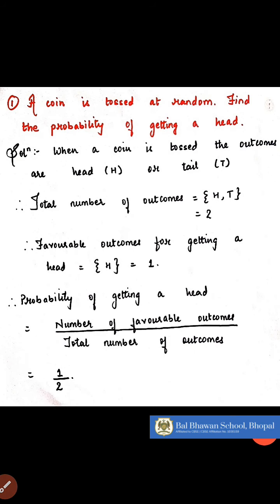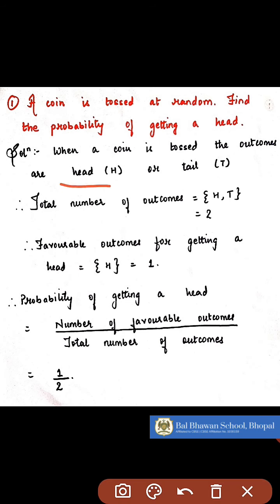Now I have a question for you. There is a coin and it is tossed at random. You have to find the probability of getting a head. We all know that when you toss a coin, either you can get a head or you can get a tail. So there are only 2 possible outcomes, and the total number of outcomes becomes 2.